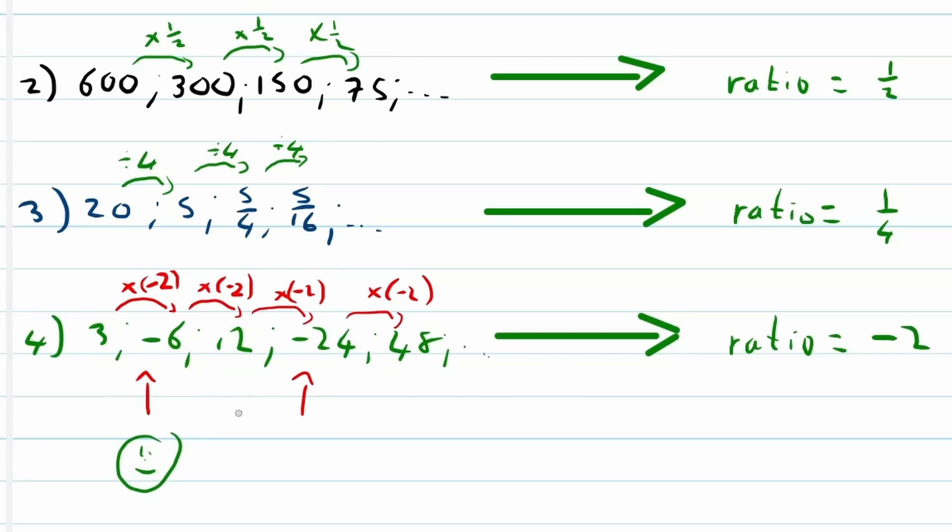How do I identify this? If you see alternating signs like a negative 6, a positive 12, and negative 24, a positive 48.